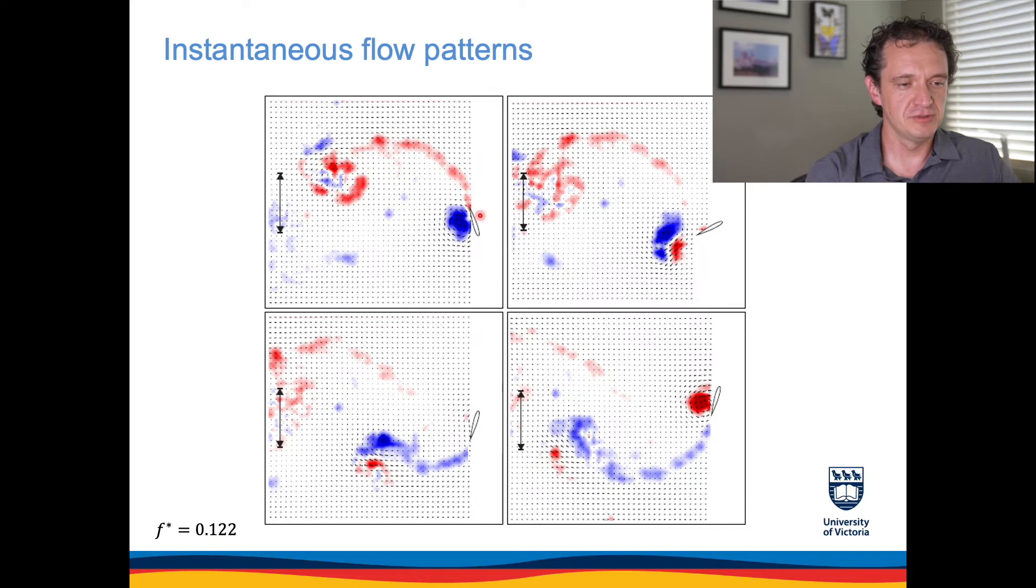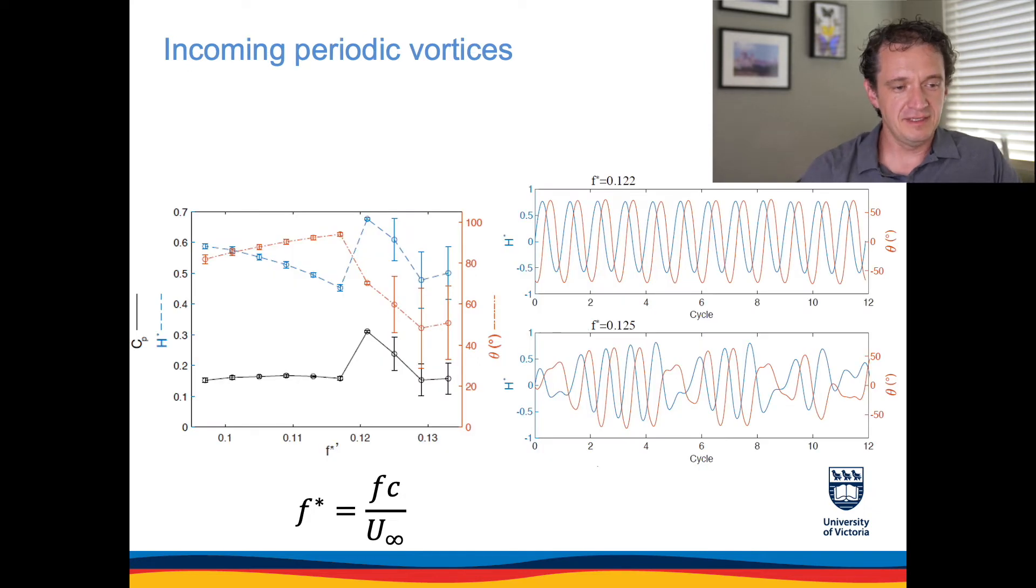The flow is from right to left in all of these images. These four plots show different phases of the foil oscillation cycle. The response of the passive foil is shown on this slide. The plot on the left shows the amplitudes of the pitch and heave in red and blue symbols as a function of the reduced frequency of the upstream foil. The black symbols show the power coefficient.